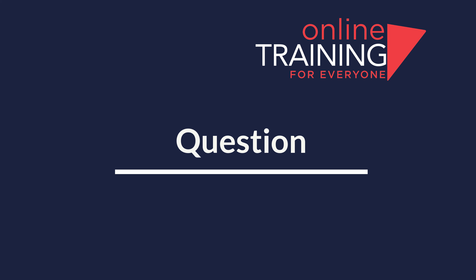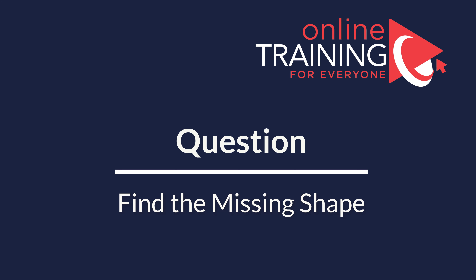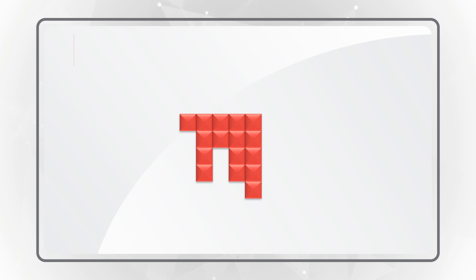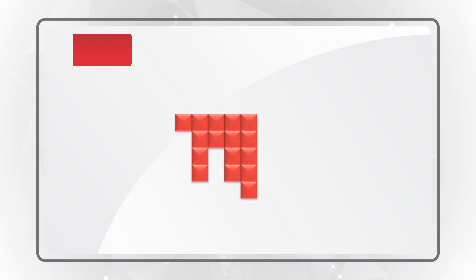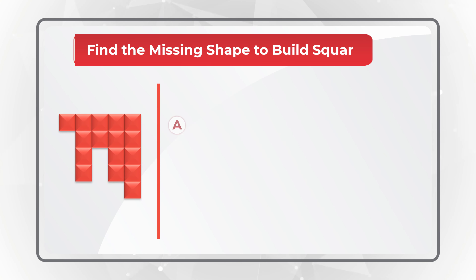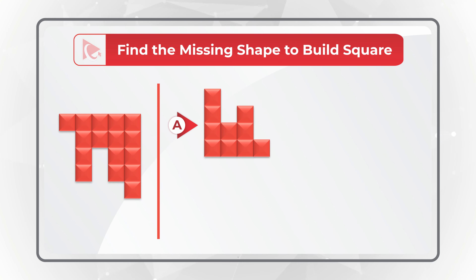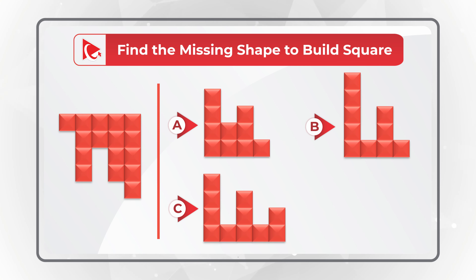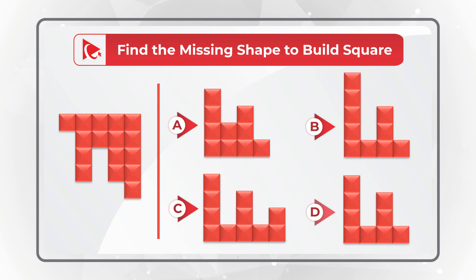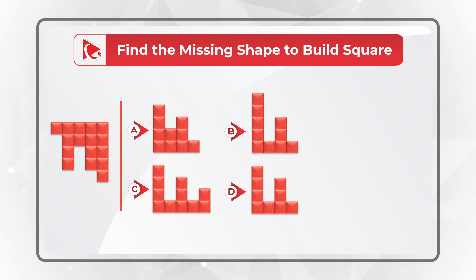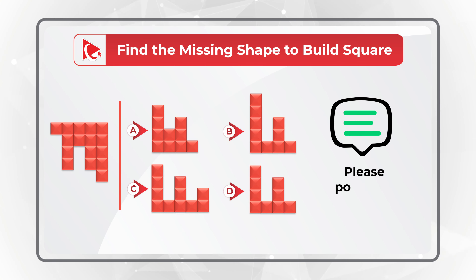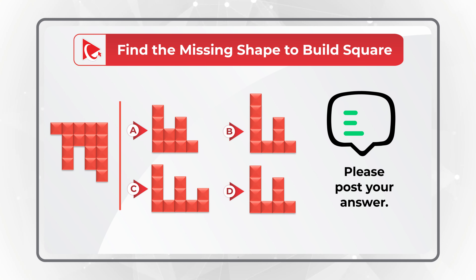And now here is a question for you to test your skills. You need to find the missing shape to build the square. You have four different choices: A, B, C, and D. Do you see the correct answer? Give yourself a little bit of time and when you're ready, please post your answer in comments — this would allow me to give you my feedback.